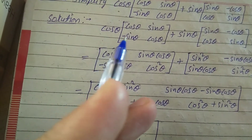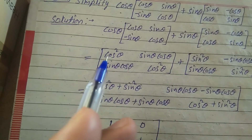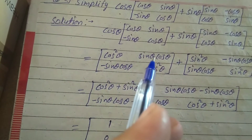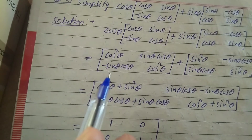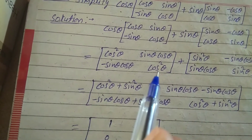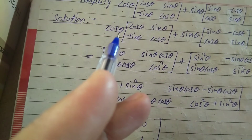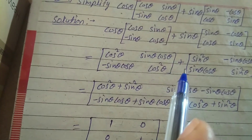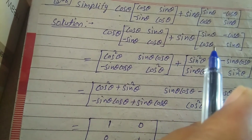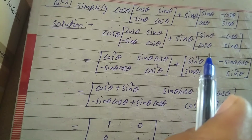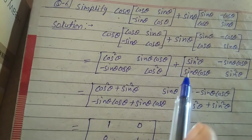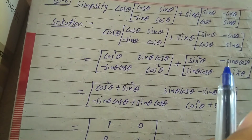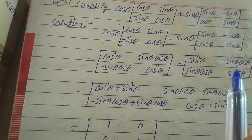Cos θ multiplies into the first matrix, giving the matrix [cos²θ, sin θ cos θ; -sin θ cos θ, cos²θ]. Then sin θ multiplies into every element of the second matrix, giving plus the matrix [sin²θ, -sin θ cos θ; sin θ cos θ, sin²θ].